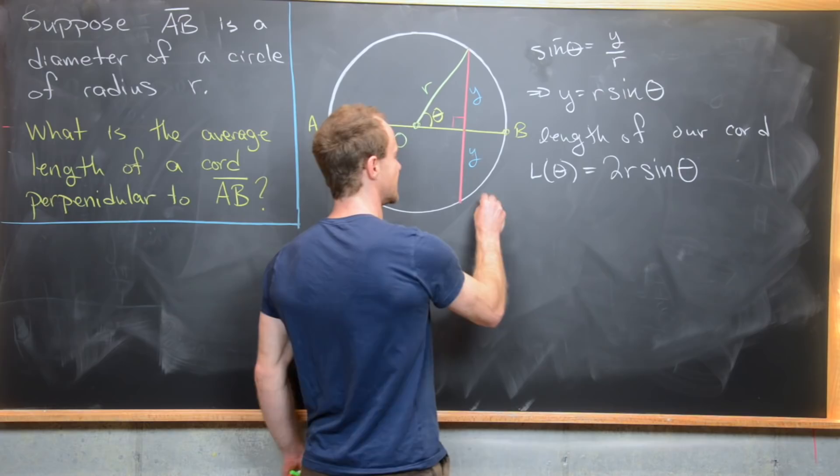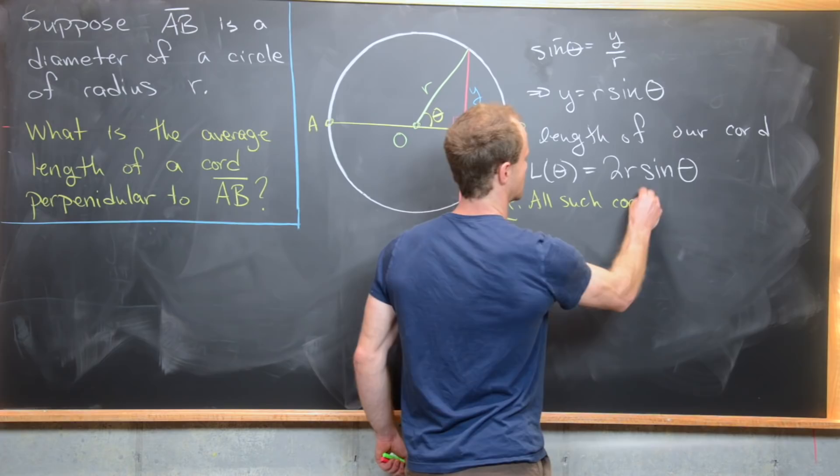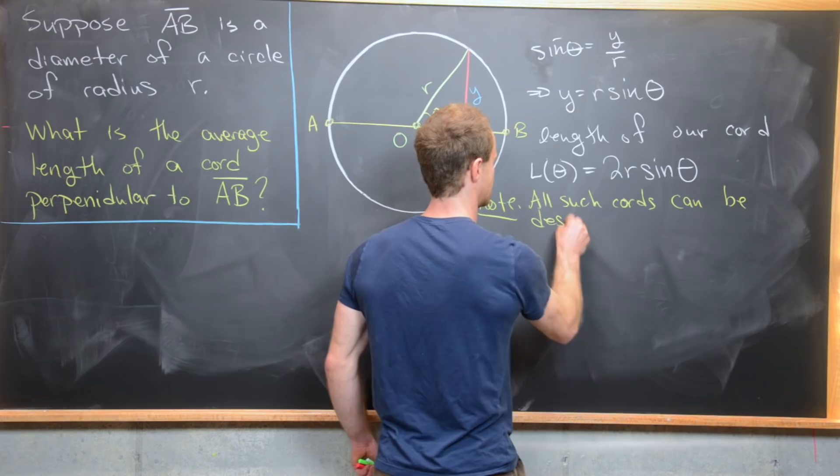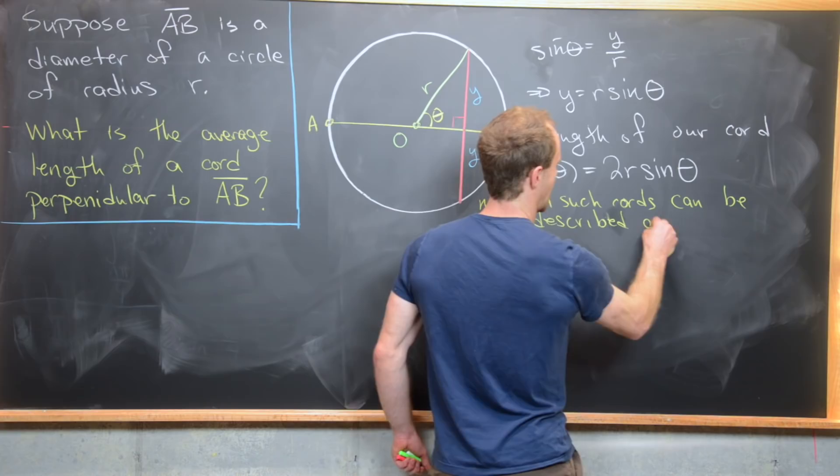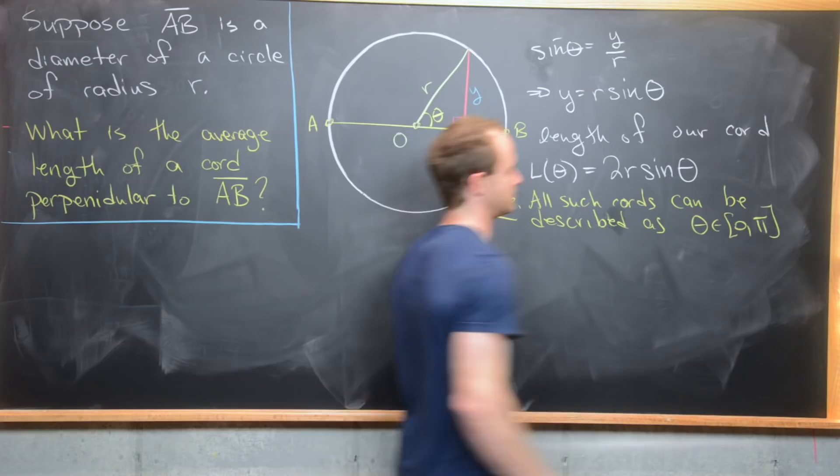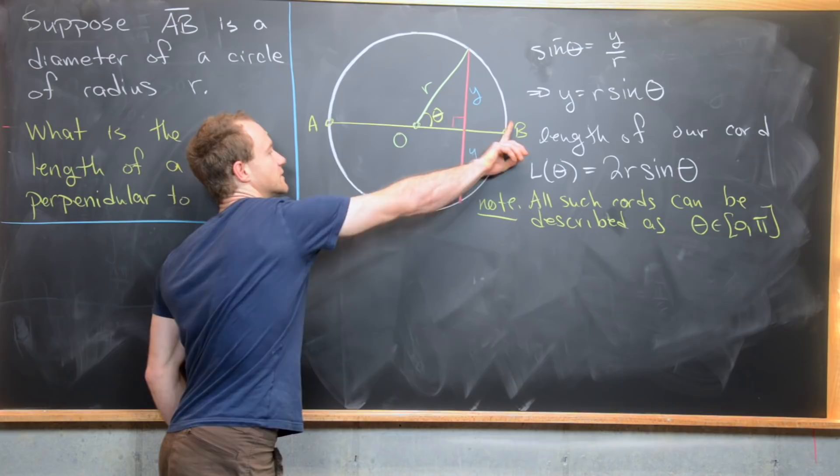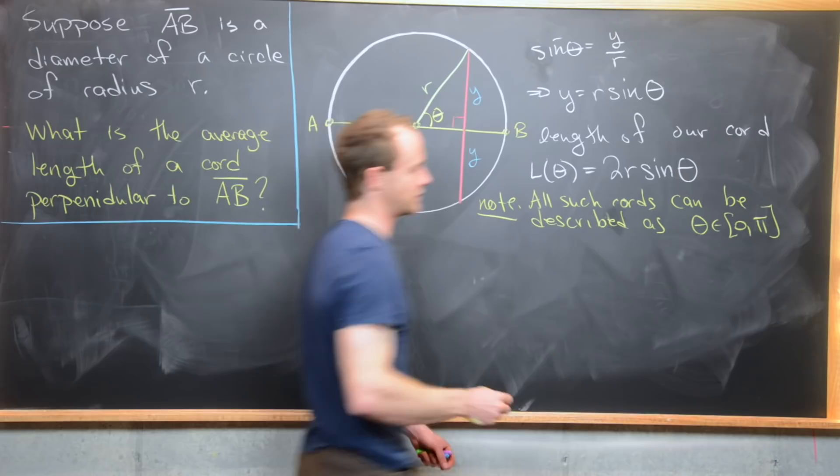We want to notice that all such chords can be described as theta runs from 0 to pi. You know, and you may not want to include the 0 in there, and you may not want to include the pi in there because those aren't really chords. But those are just like single points with respect to a whole interval of real numbers, and so those don't really count so much.